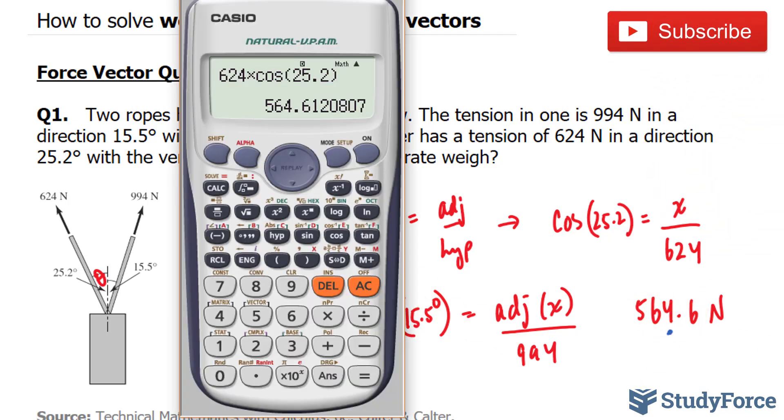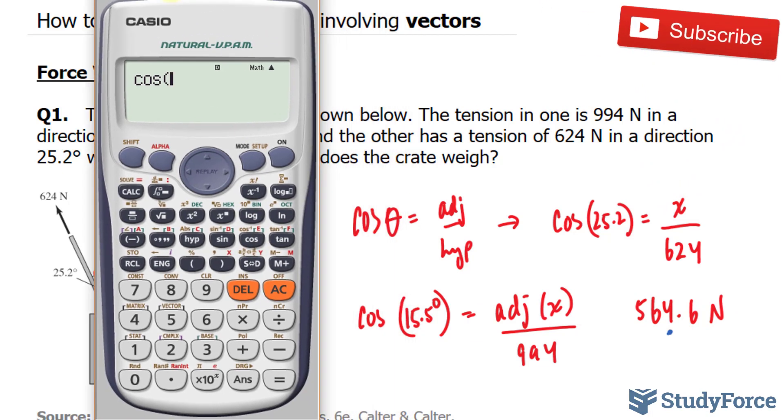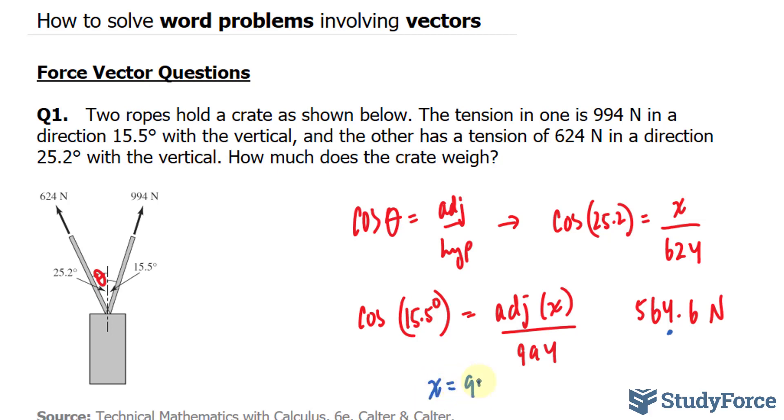We'll do the same thing below. We have cosine of 15.5 times 994. This gives us 957.8. So x is 957.8 Newtons. Once again, this has to be three significant figures. So I'll put a dot underneath the 7.